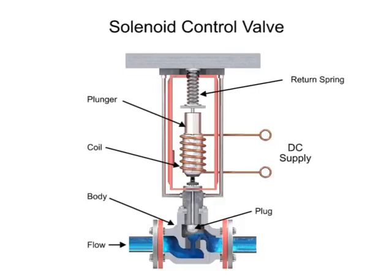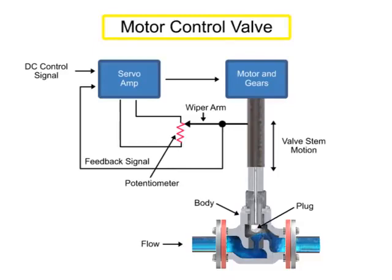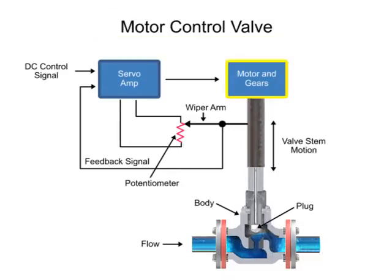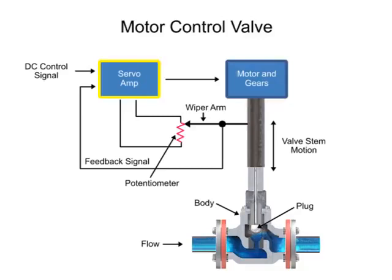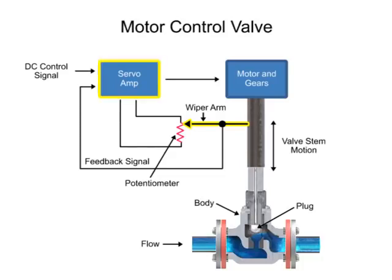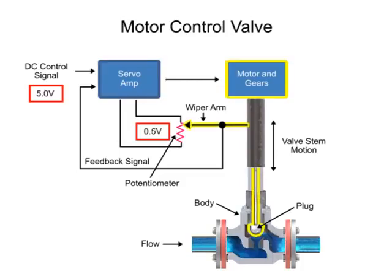Another method for variable valve positioning uses a motor and is referred to as proportional control mode. Using a gear motor attached to the valve stem, a servo amplifier provides a DC control signal that moves the valve to the desired position. Feedback is achieved with a wiper arm attached to the valve stem that sends a signal back to the servo amplifier where the position is monitored. The servo amplifier drives the motor until the control signal is equal to the feedback signal.